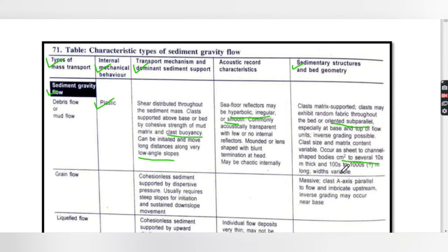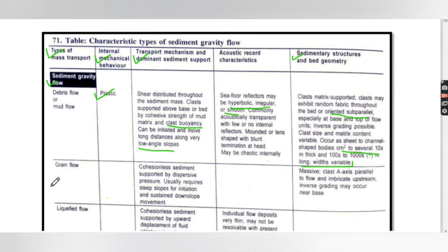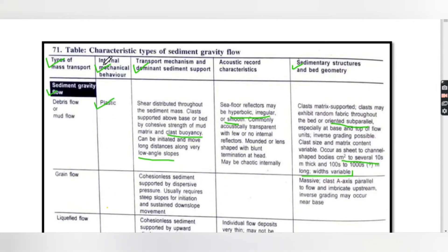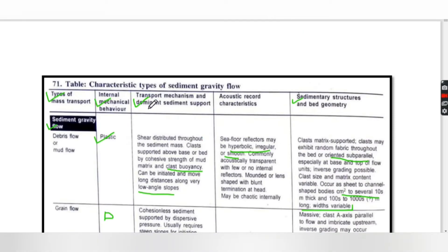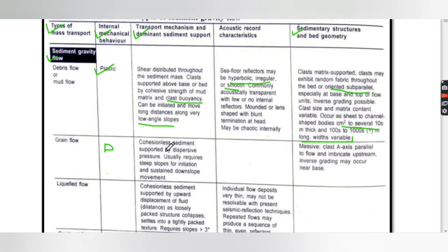For grain flow, internal mechanical behavior is also plastic. Transport mechanism and dominant sediment support: cohesionless sediment supported by dispersive pressure. It usually requires steep slopes for initiation and sustained downslope movement.